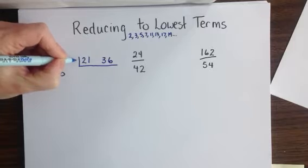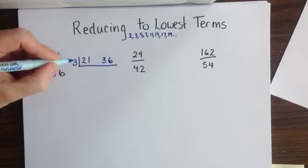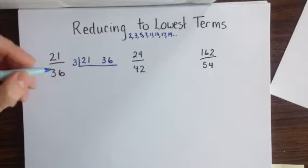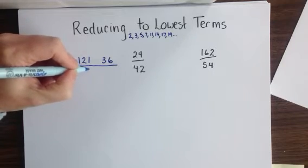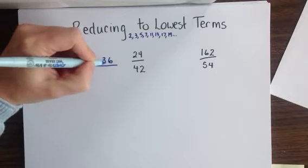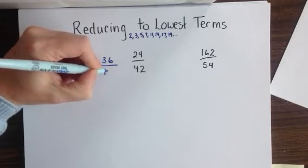So we'll put it on the outside as our divisor, and then divide each one of the numbers in the same division symbol. 3 fits into 21 seven times, and 3 fits into 36 twelve times.